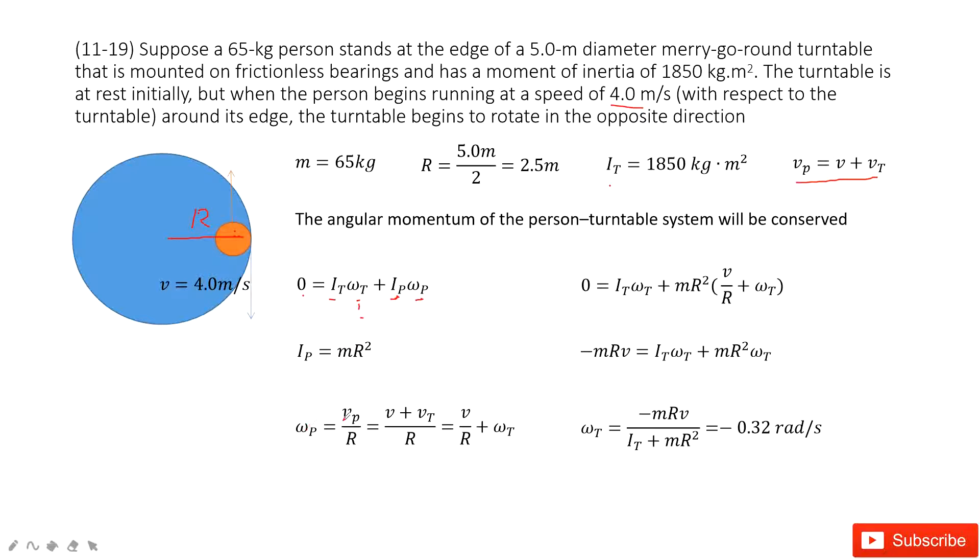And ωp for this person, it's angular velocity for the person. Just use vp divided by r. And then vp is there. So v plus vt divided by r. Now we look at there. We can use v divided by r plus this one. vt divided by r is ωt.